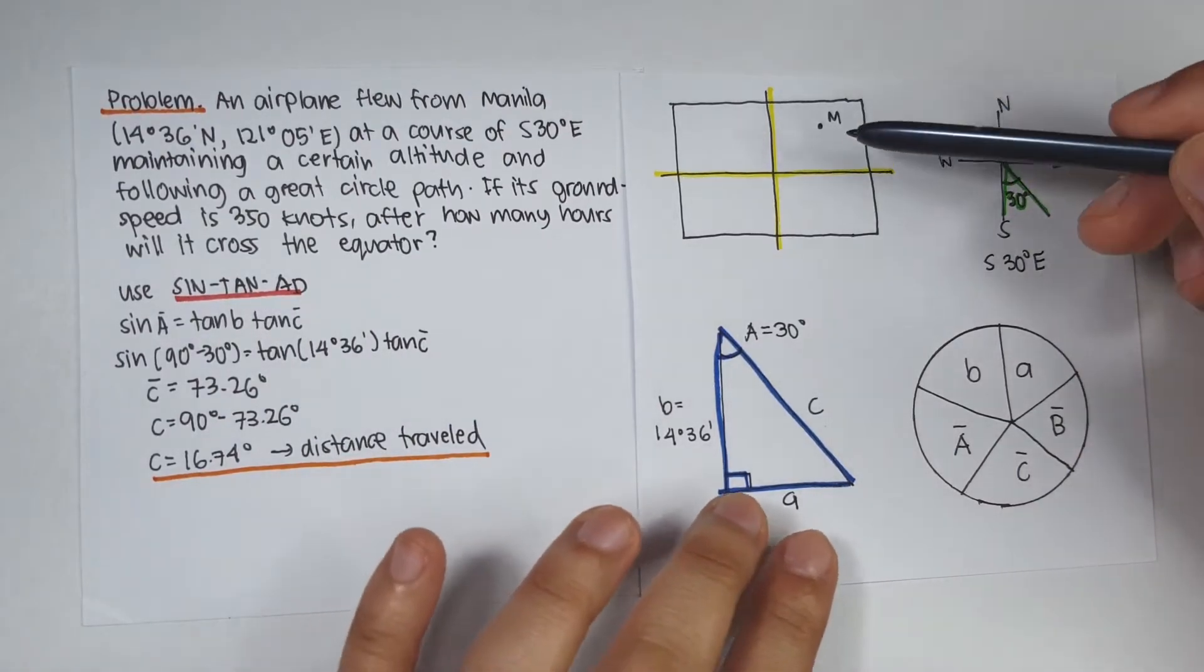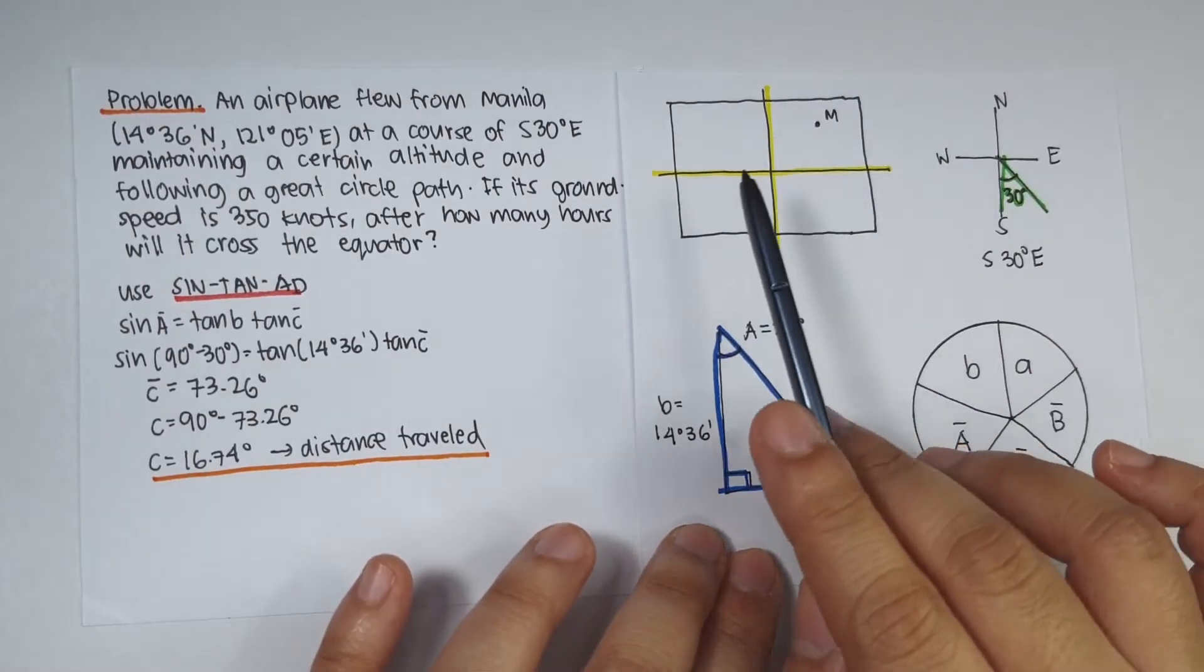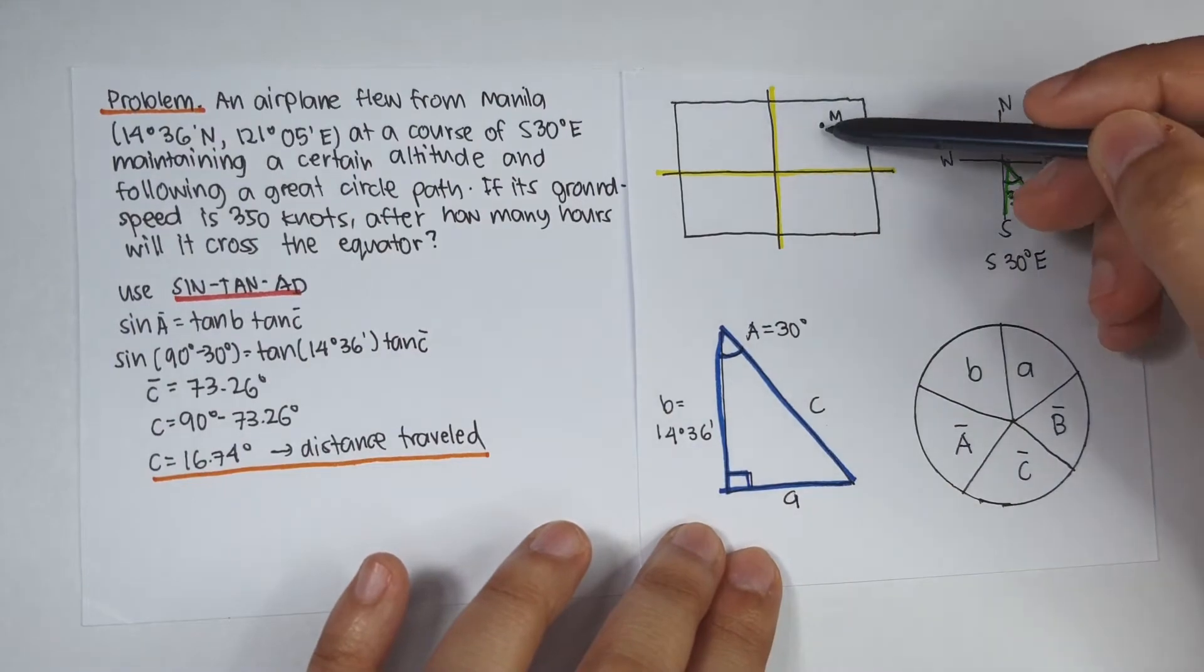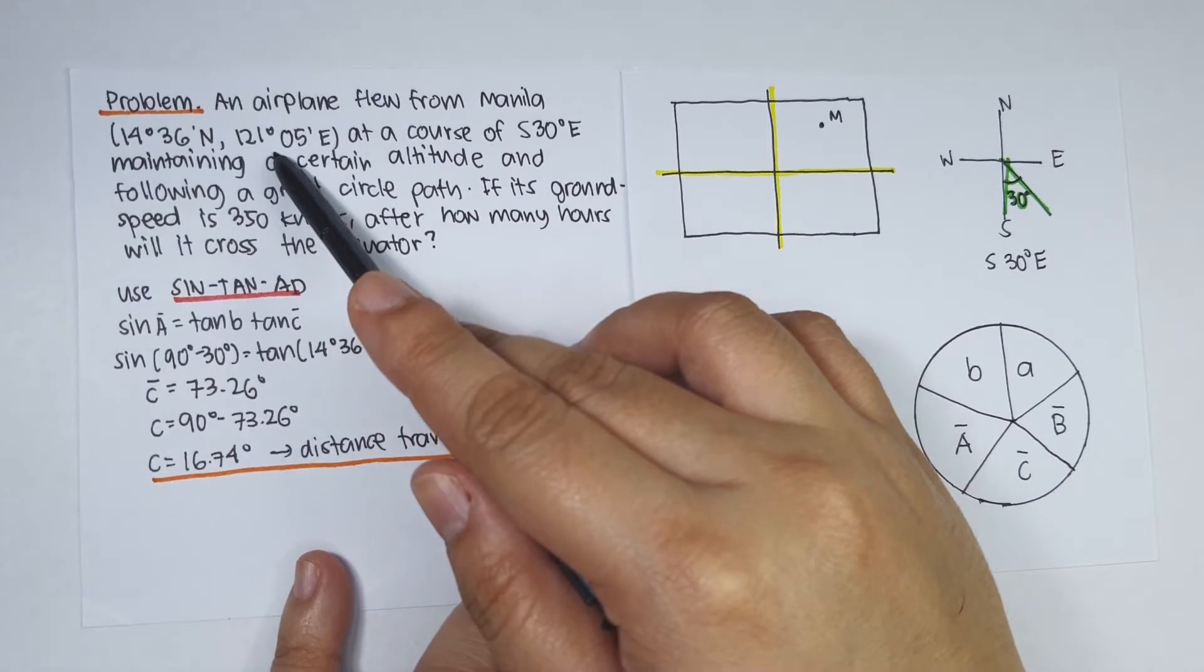So say for example, this is our world map, and this is the prime meridian where the latitude is 0 degrees. This is the equator where the latitude is 0 degrees, and this is Manila at 14 degrees 36 minutes north, and 121 degrees 5 minutes east.